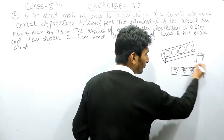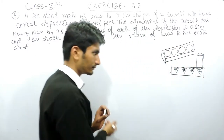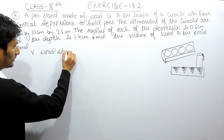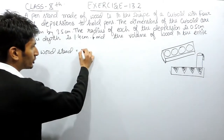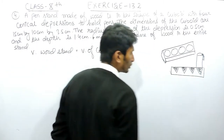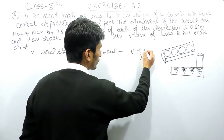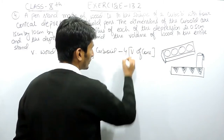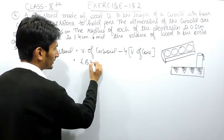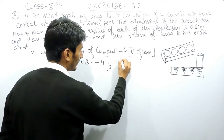If you want to find the volume of this stand, that will be the volume of the cuboid minus the volume of these four cones. The volume of this wood stand equals the volume of the cuboid minus four cones, because in these cones there will be no wood present. The volume of the cuboid is L × B × H, minus 4 multiplied by the volume of the cone which is (1/3)πr²h.